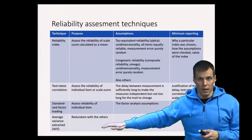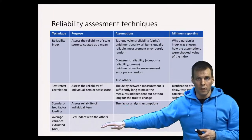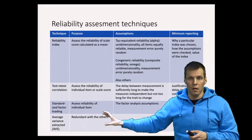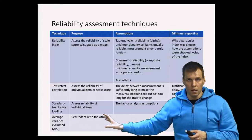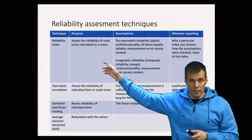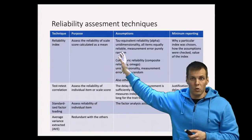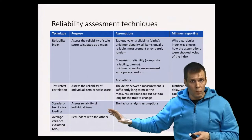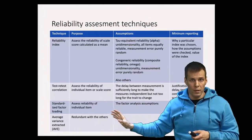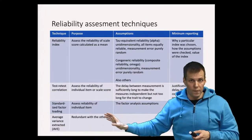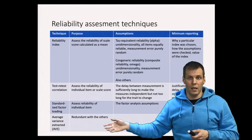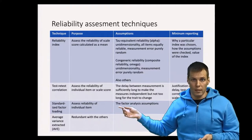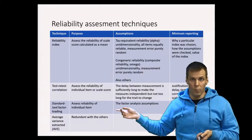Average variance extracted (AVE) is sometimes used but is redundant with other measures, so there is really no reason to use it. It is not a reliability index in the same sense as the others because it does not quantify the reliability of the sum score. Since you need to report the factor loadings anyway, the AVE does not provide any additional value beyond the standardized factor loadings you would normally report.